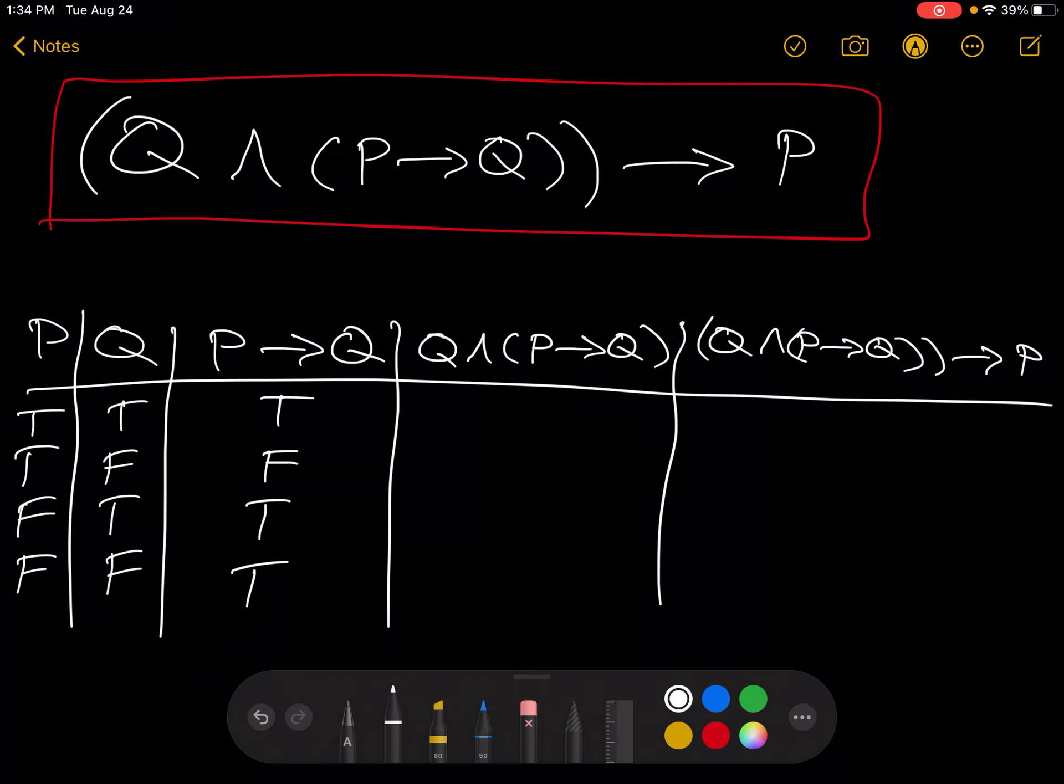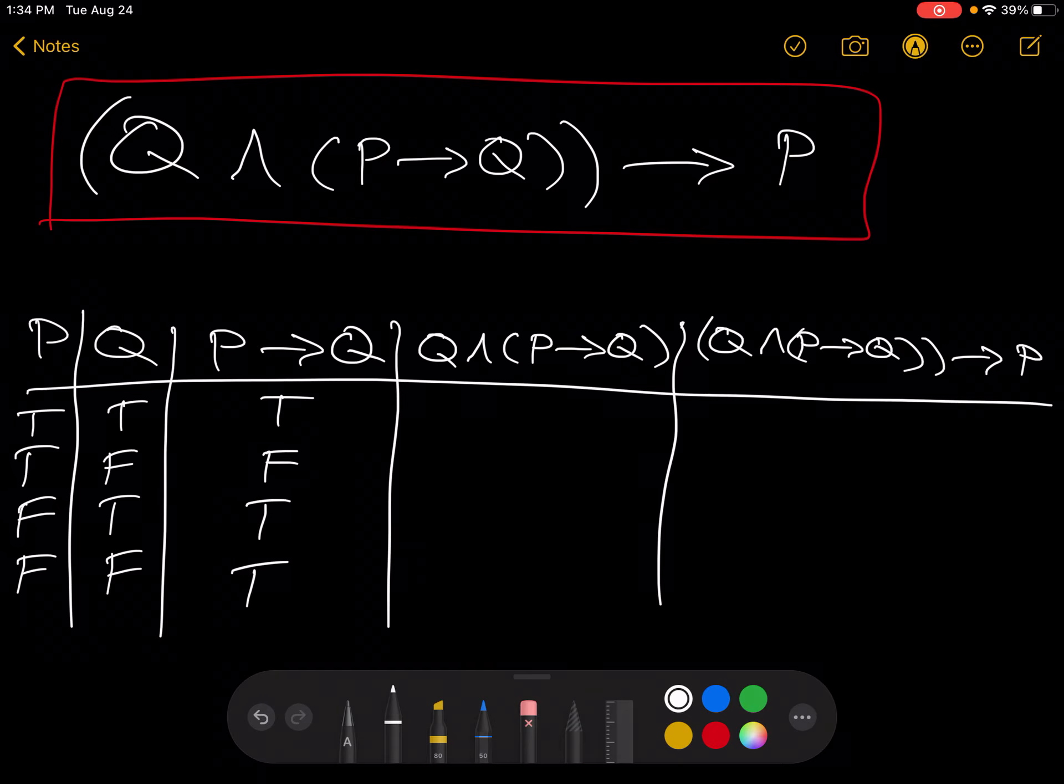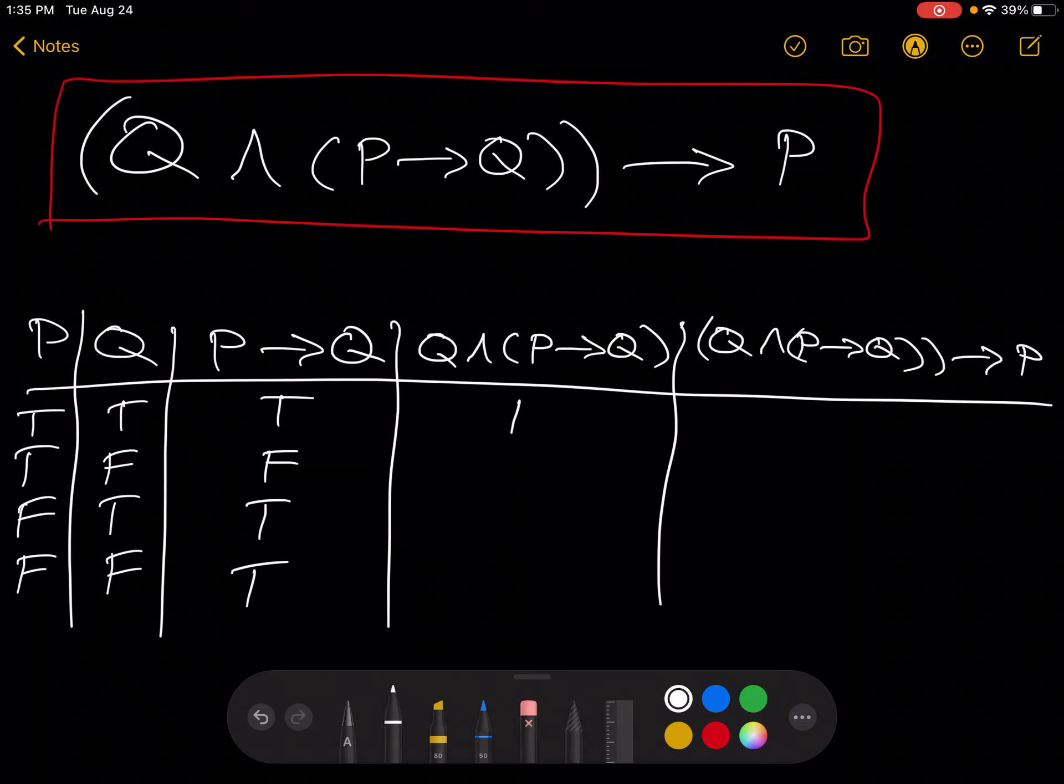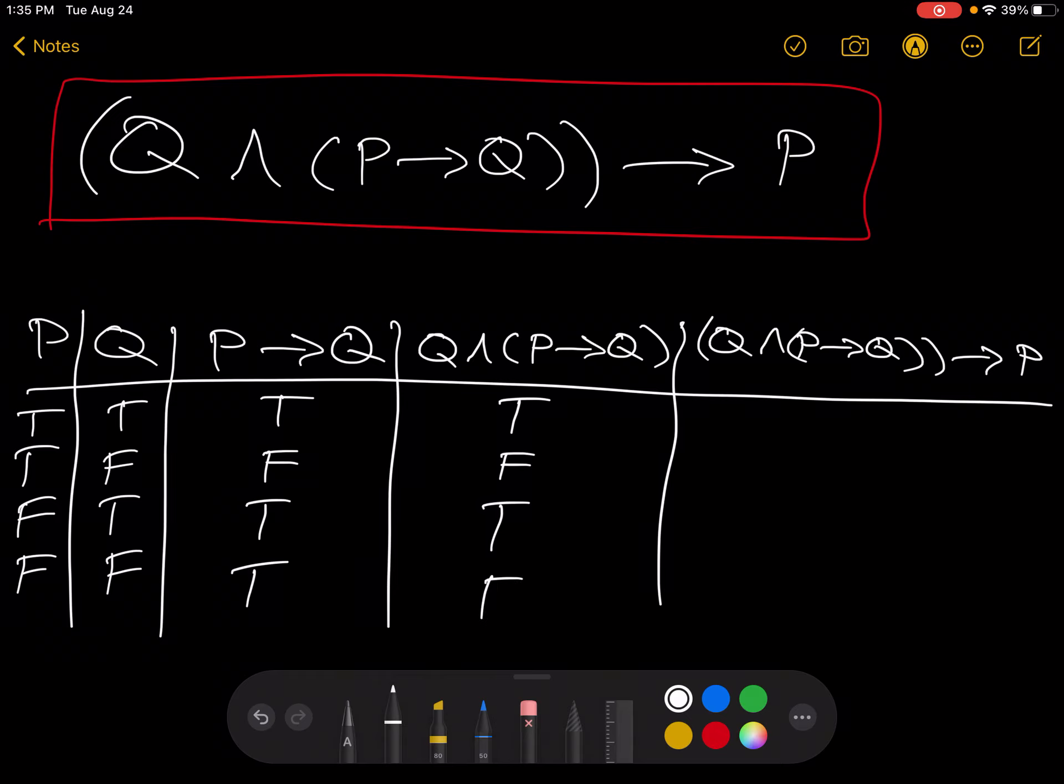Now, Q and P implies Q. Remember, an and is true when both pieces are true. So, we have true, true, false, and false.